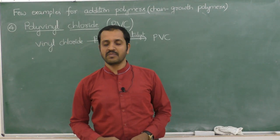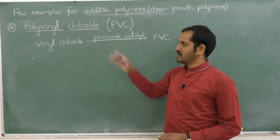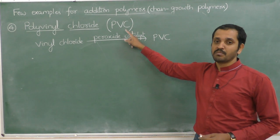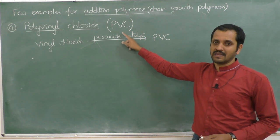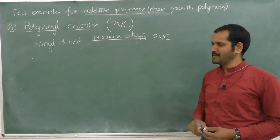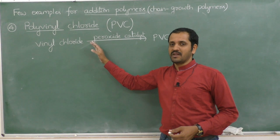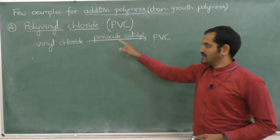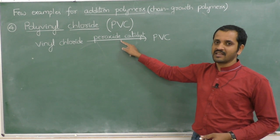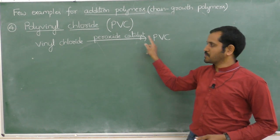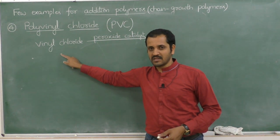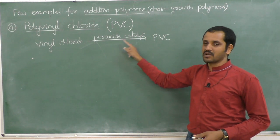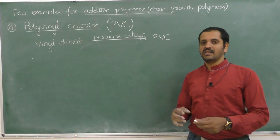The fourth example for addition polymers is polyvinyl chloride, commonly called PVC. PVC is obtained by the polymerization of vinyl chloride in the presence of a peroxide catalyst.